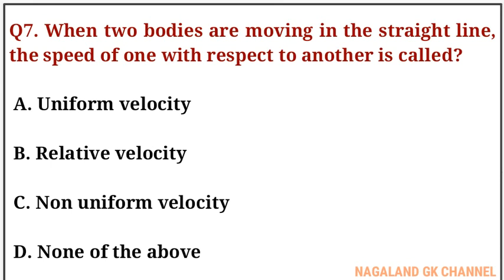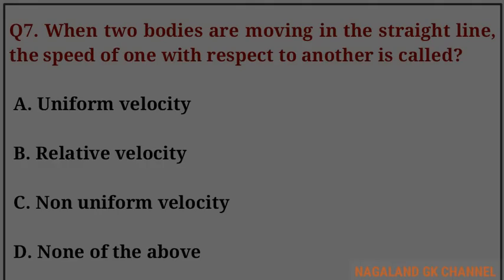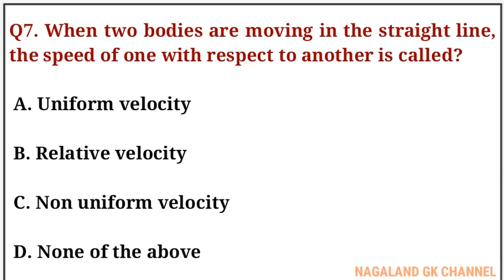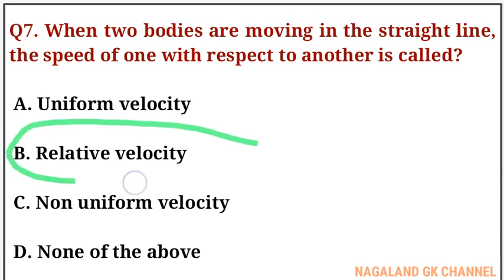Question number seven: when two bodies are moving in a straight line, the speed of one with respect to another is called what? The correct answer is option number B, that is relative velocity.